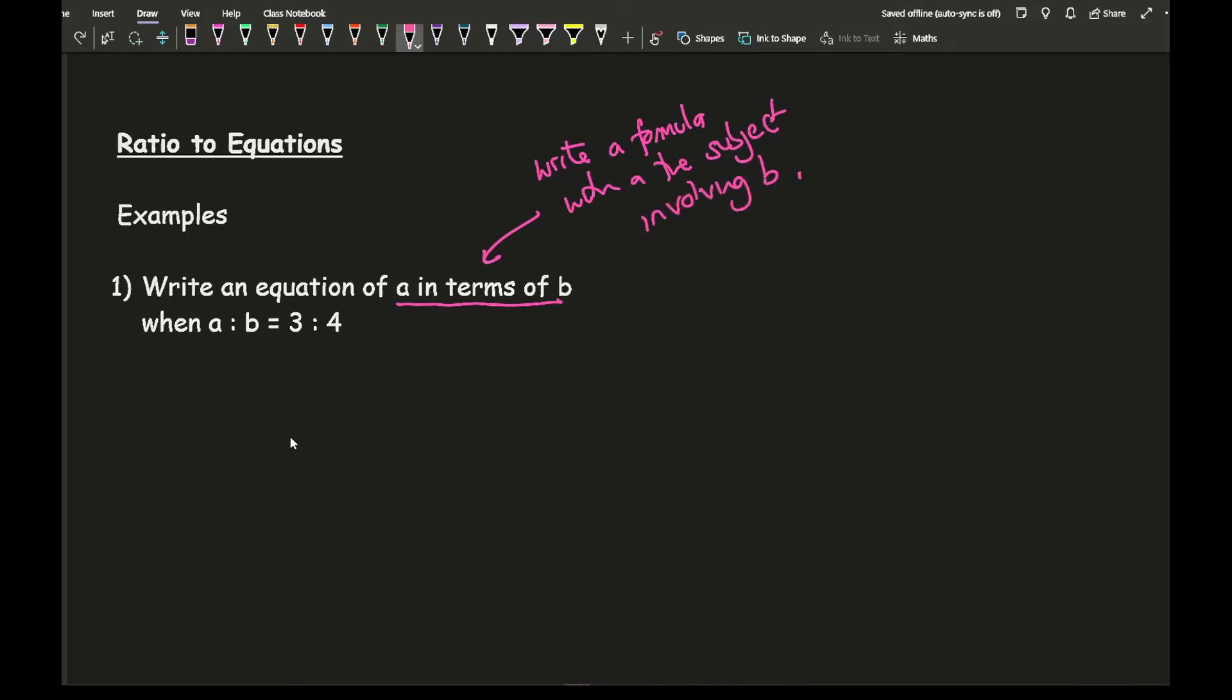What we're going to do is convert both these into fractions. Step one is convert the ratios into fractions. We end up with a over b equals 3 over 4. The next step, step two, is to then cross multiply. If we cross multiply, we end up with 4a equals 3b.